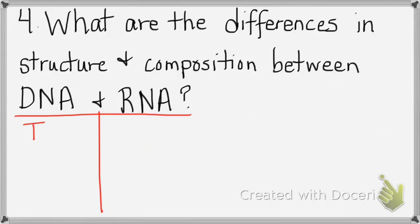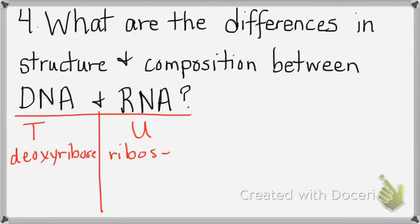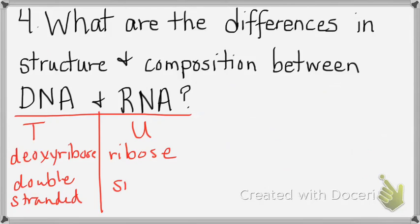Differences between DNA and RNA: DNA has T but RNA doesn't — instead RNA has U. DNA has deoxyribose, but RNA has ribose. And DNA is double-stranded — you can always spot DNA because it's double-stranded — while RNA is single-stranded.